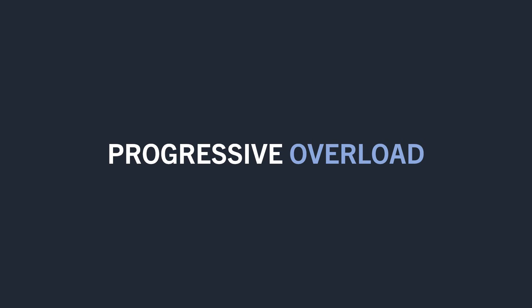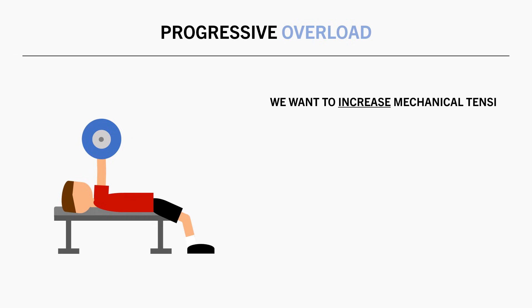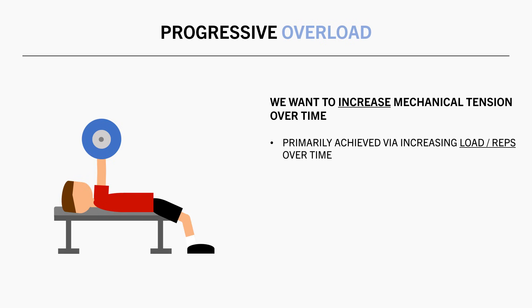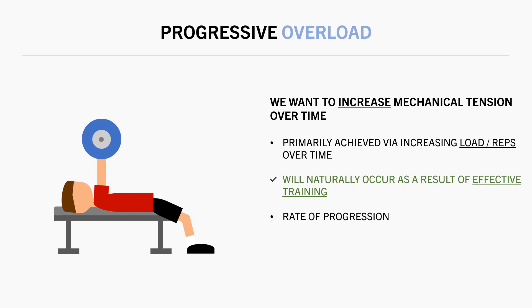Another relevant principle that can be extrapolated from the mechanical tension mechanism is progressive overload. We want to increase mechanical tension over time to achieve some sort of progression. While we don't necessarily have to try and lift the most amount of weight possible within a session, we still want to try and lift more weight or perform more reps over time with effective technique. This doesn't mean you have to lift more weight every week — it just means that over time, lifting more weight or reps is usually a good sign that muscle growth is occurring. You don't usually need to force this to happen; it should naturally occur as a result of effective training if you were training with sufficient intensity. The rate at which progressive overload occurs is different for each lifter, based on lifting experience, diet, sleep, stress, and other lifestyle factors.